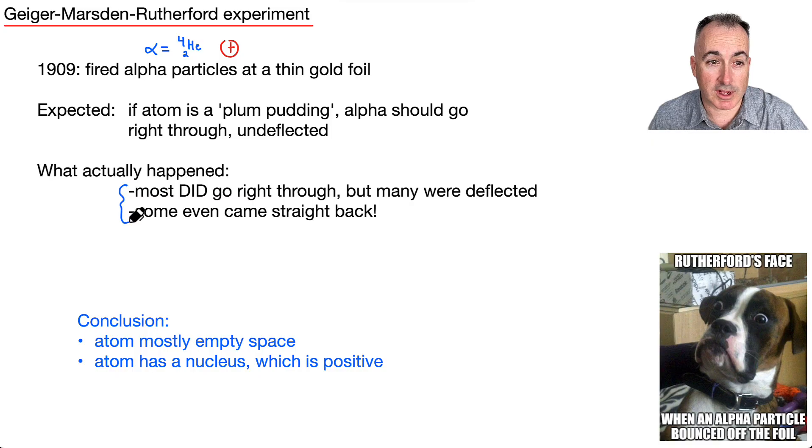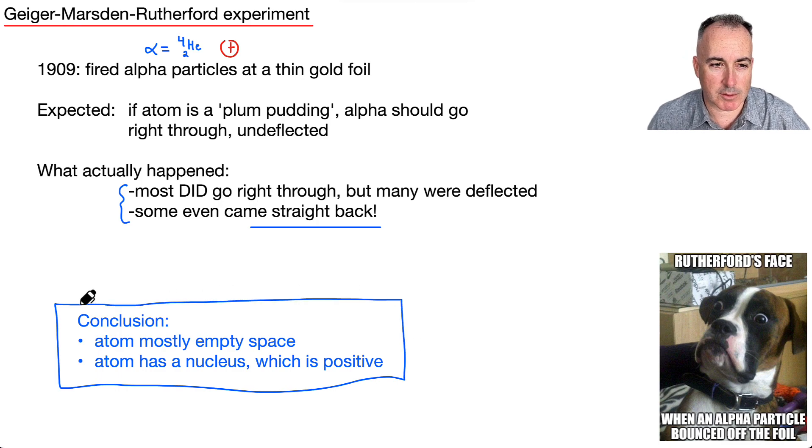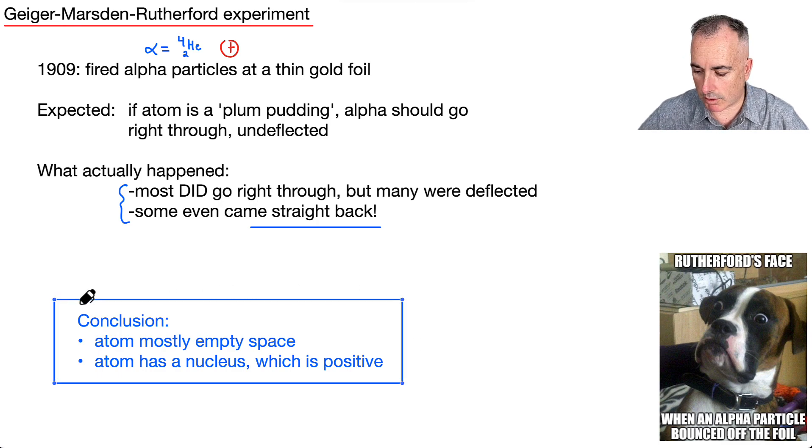Most did go through, that's true. But many were deflected. In fact, some actually came back, which was really surprising. That's why I put Rutherford's face here—it bounced off the foil, like what? They were able to conclude that the atom must be mostly empty space, and that the atom must have a nucleus which is positive. Let me show you this experiment.